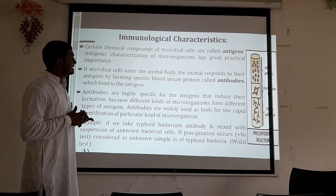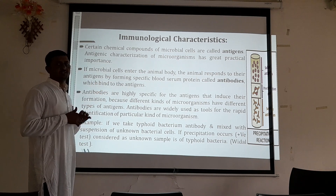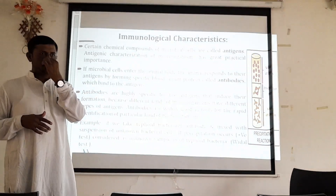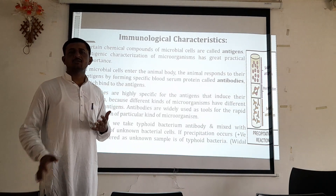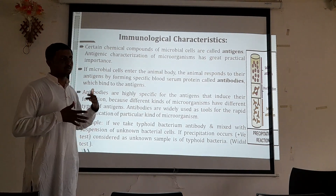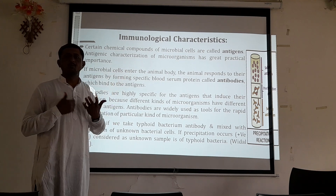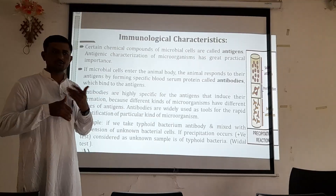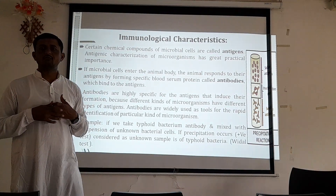If microbial cells enter the animal body, the animal responds to their antigens by forming specific blood serum proteins called antibodies, which bind to the antigens. Antibodies are produced by our immune systems — they are like soldiers of our body. They try to avoid the invasion of pathogenic organisms that are foreign to our body. This is the normal mechanism of every individual or animal to protect the body from infection.